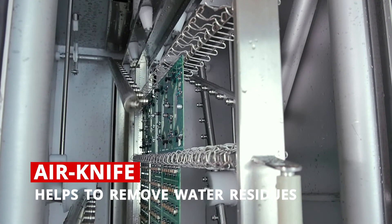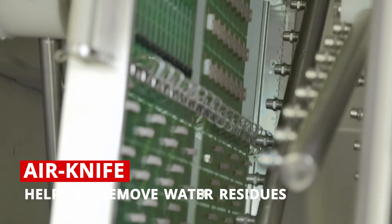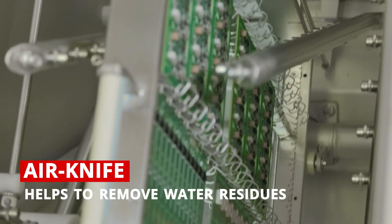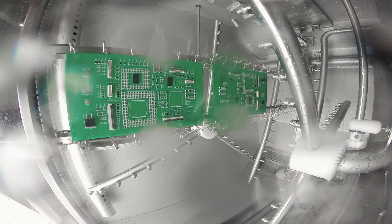Another recommended feature is the chemical isolation air knife, which makes the drying process more efficient with a shorter cycle. It helps to remove water residues from the surface of components and connectors on assembled boards.